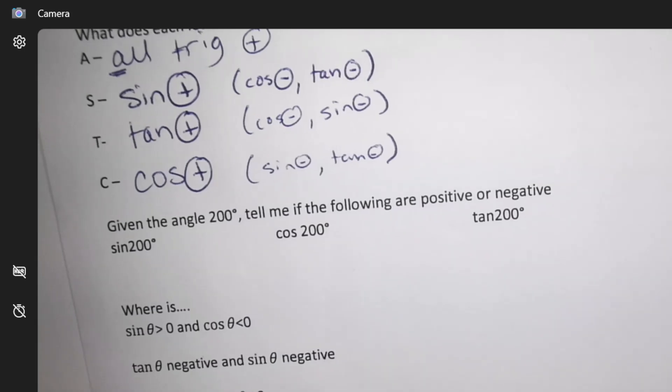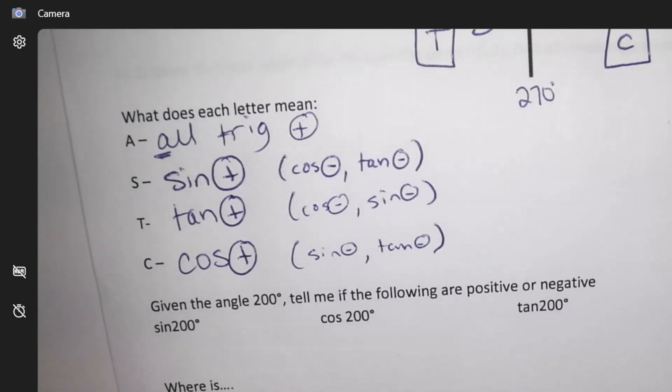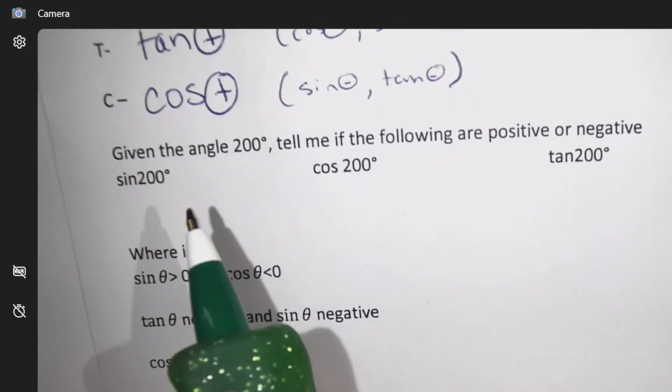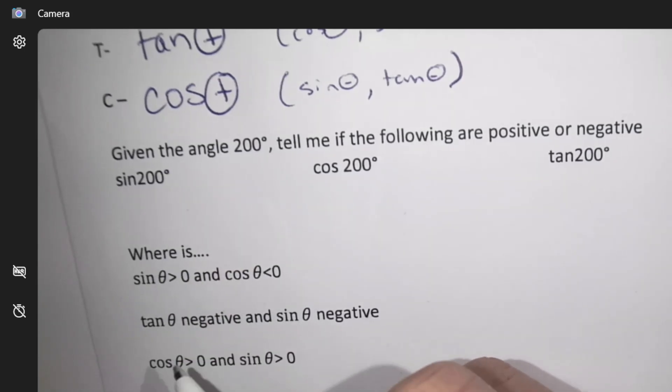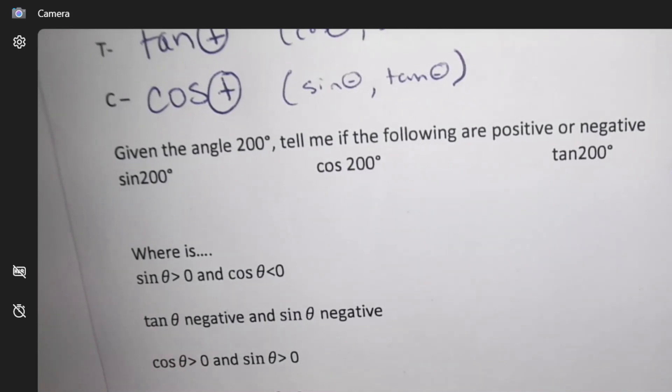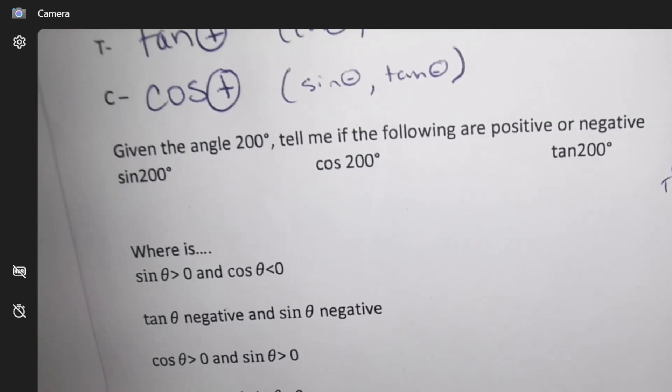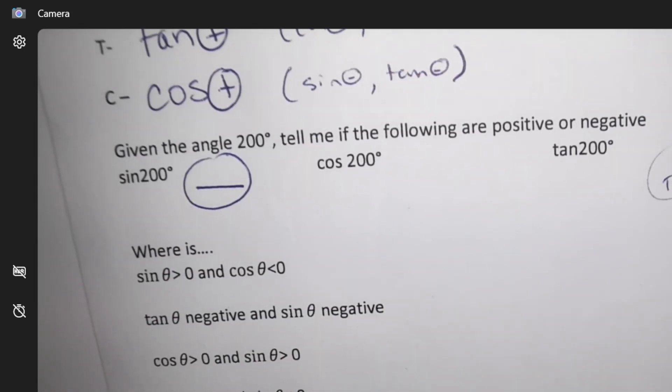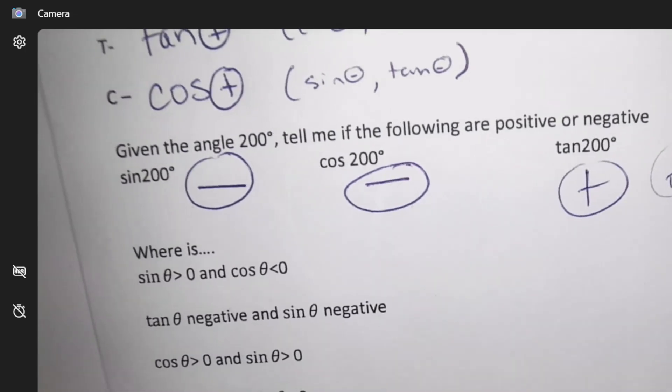If I was to do this in my calculator, but I'm not going to, I just want to know if this is going to be positive or negative. 200 degrees. Which quadrant am I in if I'm 200? I'm in quadrant 3. So as ASTC, I'm in the T quadrant. So what am I going to know? Sine is going to be negative. Cos is going to be negative. And tangent is going to be positive.